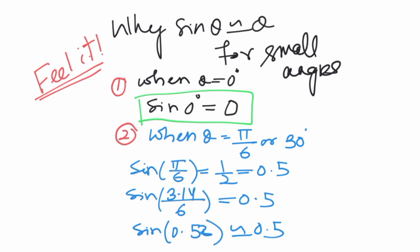So sin 3.14 by 6, that is nearly equal to 0.52. This is also now 0.5. Isn't it interesting? Hope you like it.